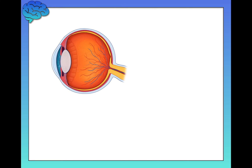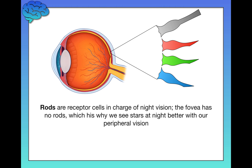Now let's talk about rods and cones. We're going to zoom in on one specific part of the retina that has both rods and cones. Rods and cones are called rods and cones because they literally look like rods and cones. You can see on screen my symbolic representation — the one that looks like a rod is a rod, and the ones with pointy cone-shaped heads are the cones. You can also see that we have red, green, and blue cones — we'll get to that in a future video about color processing.